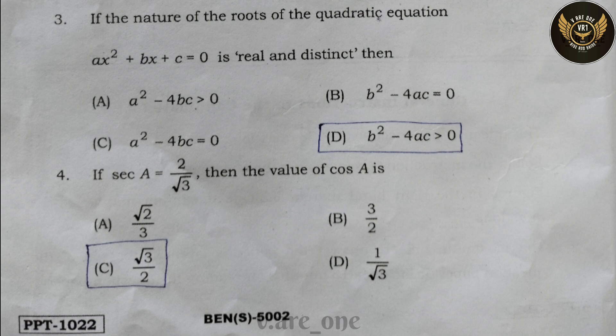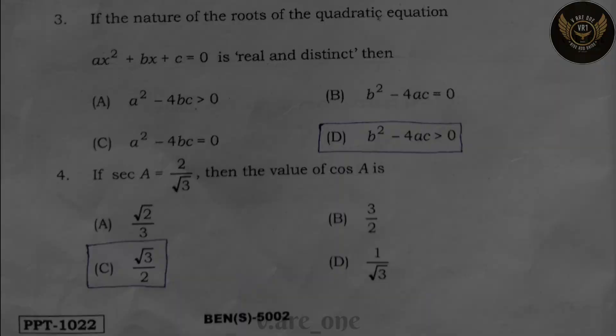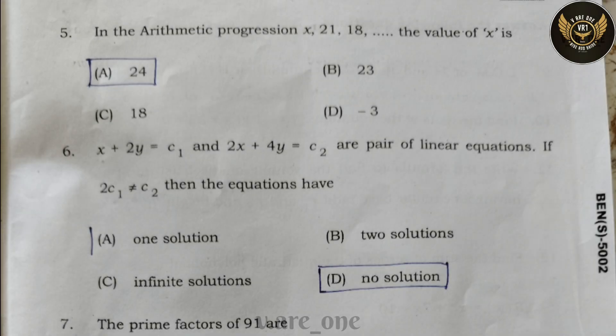Let's move forward. Fifth question: in the arithmetic progression x, 21, 18 — the value of x is option A: 24. Question number six: x + 2y = c₁ and 2x + 4y = c₂ are a pair of linear equations.